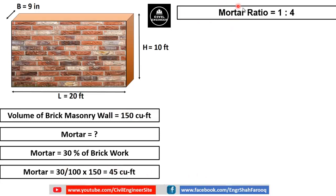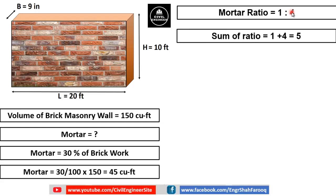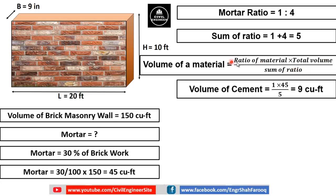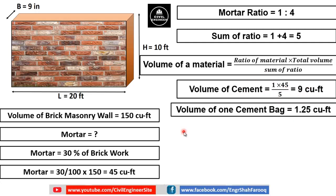Let's say the ratio of mortar used is 1:4, where 1 represents cement and 4 represents sand or fine aggregate. The sum of ratio = 1 + 4 = 5. Volume of a material = (Ratio of material × Total volume) ÷ Sum of ratio. Volume of cement = (1 × 45) ÷ 5 = 9 cubic feet. Since the volume of one cement bag is 1.25 cubic feet, number of cement bags = 9 ÷ 1.25 = 7.2, or approximately 7 bags.